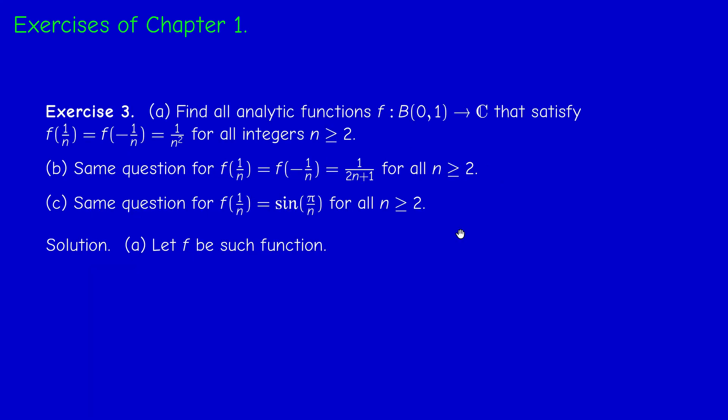Now, third exercise is standard. We always ask such questions in the exam. First question, find all analytic functions from the open unit disk to C that satisfy this equation: F of 1 over n equals F of minus 1 over n equals 1 over n squared for all integers bigger or equal than 2.